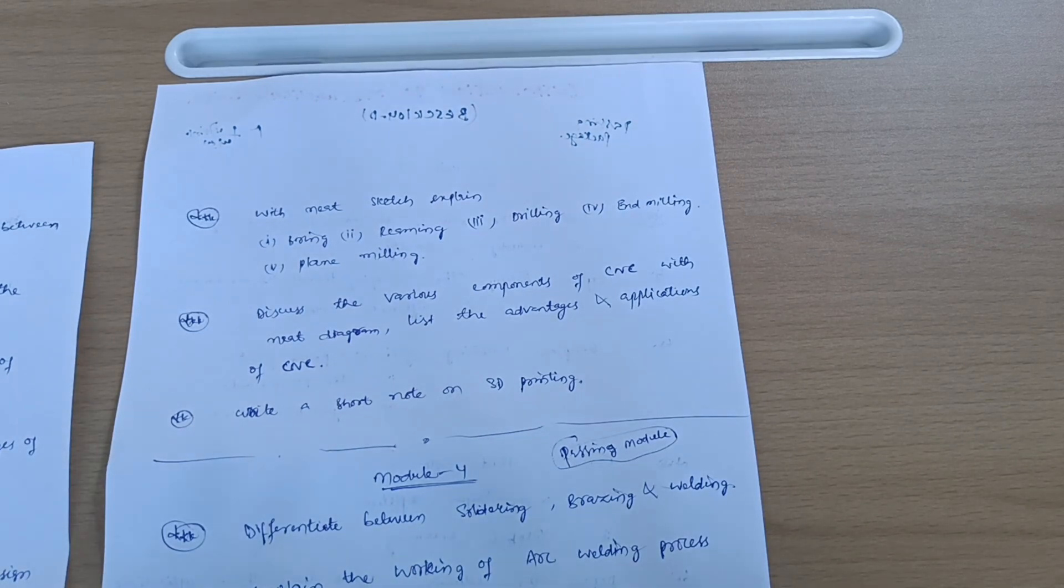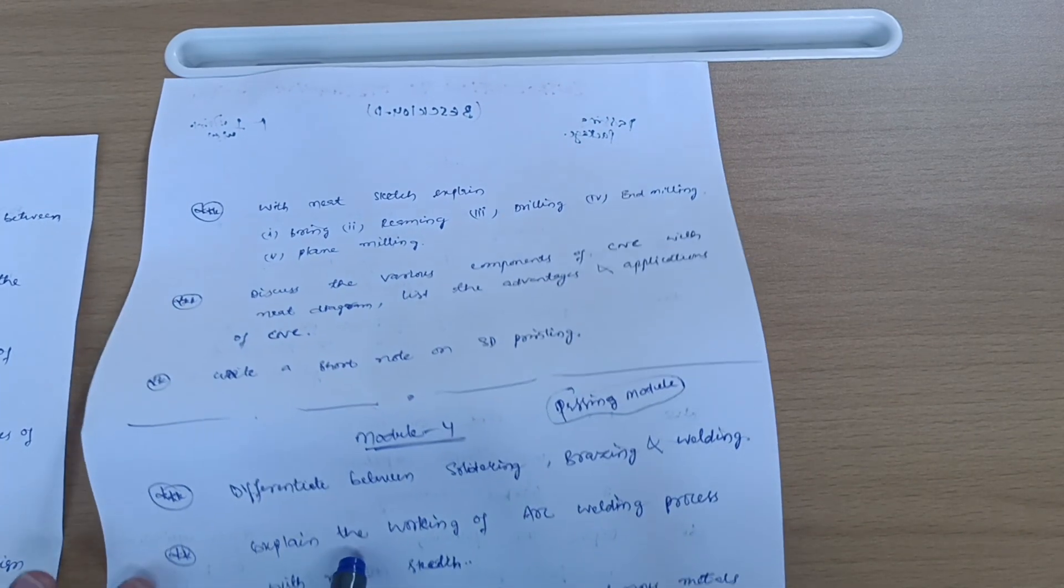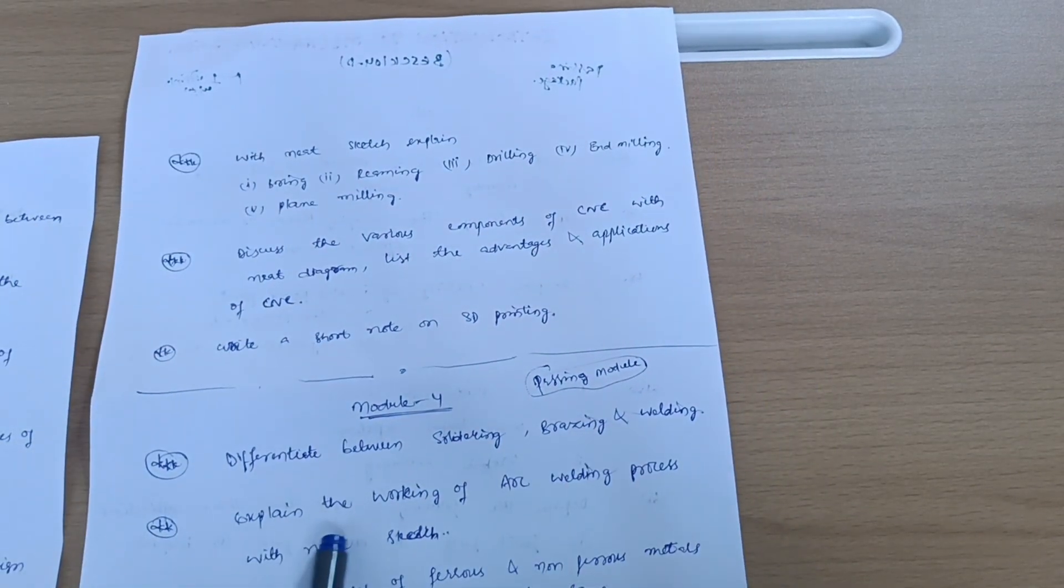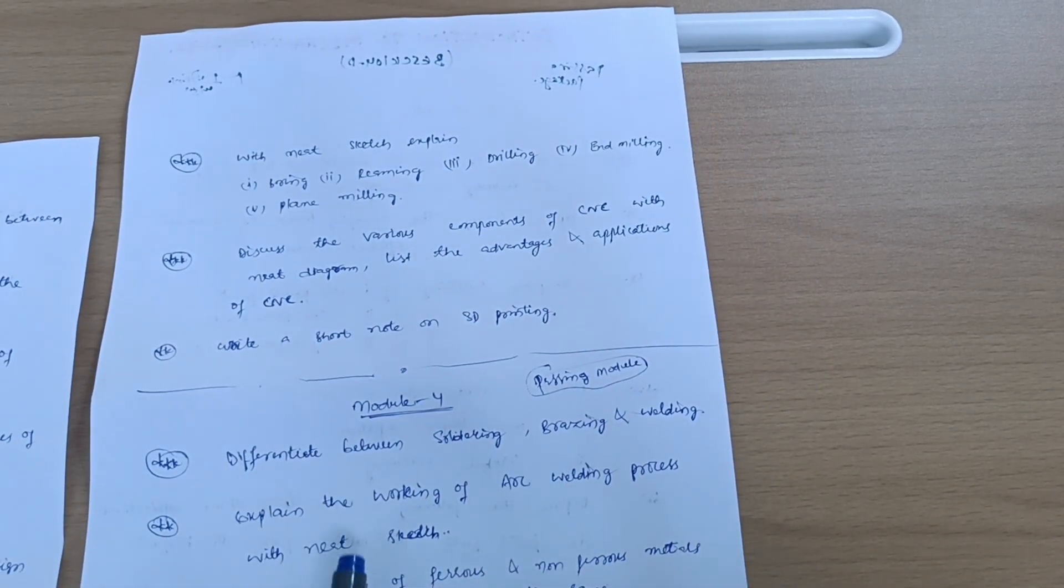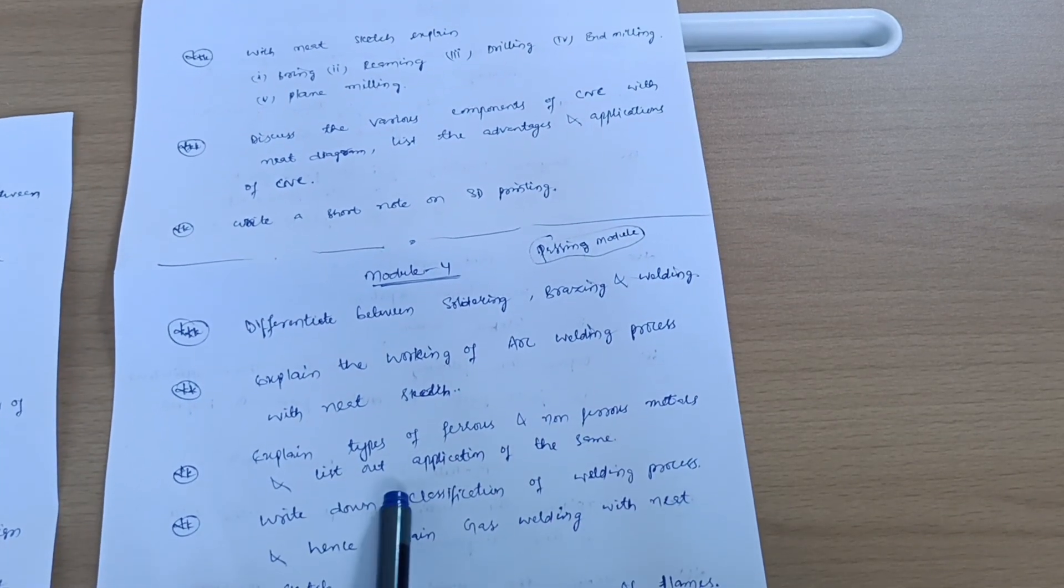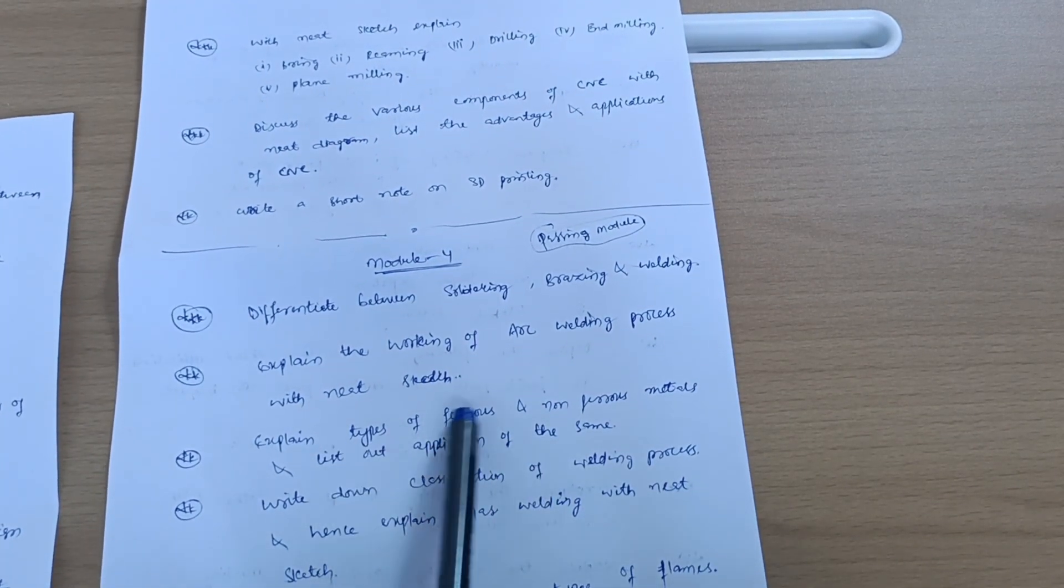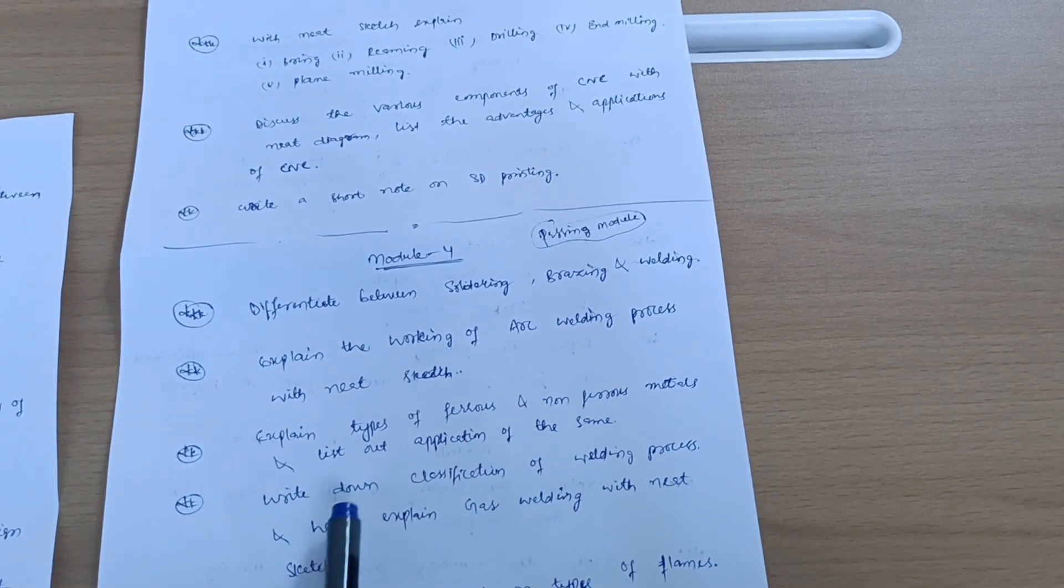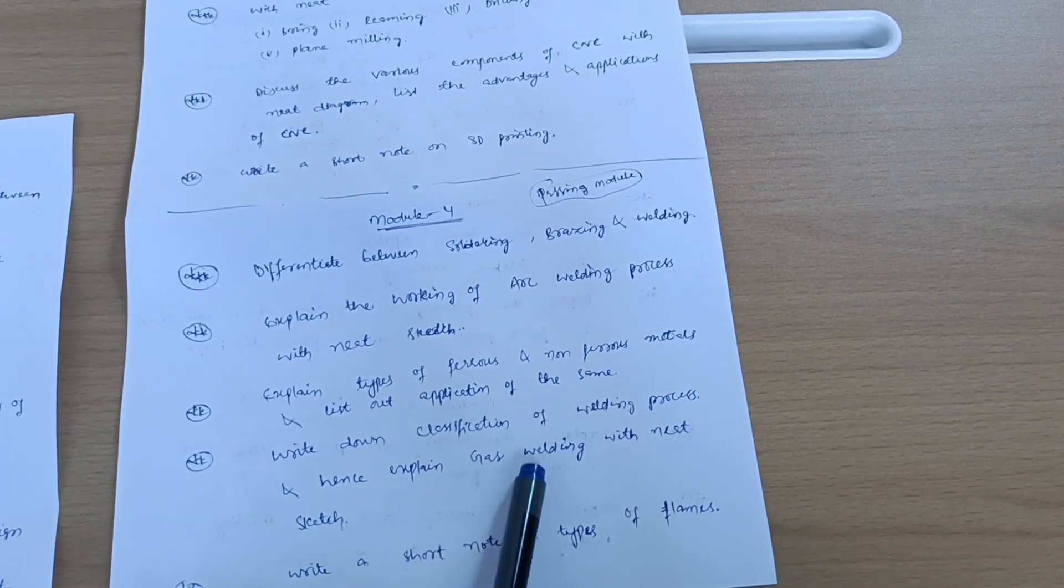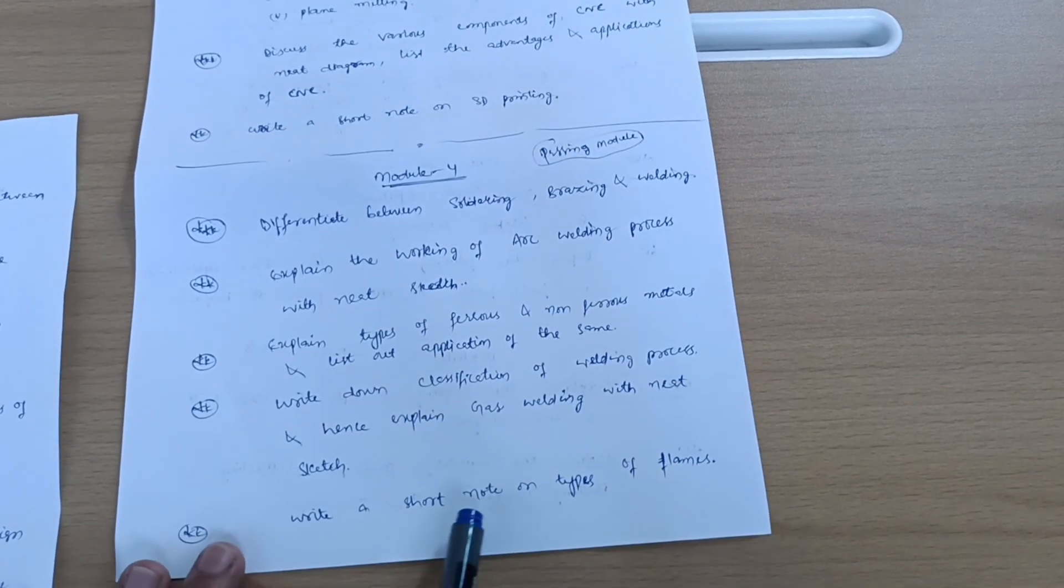Next passing module is Module 4, in which you have to cover questions like: differentiate between soldering, brazing and welding; explain the working of arc welding process with neat sketch; explain types of ferrous and non-ferrous metals and list out applications of the same; write down classification of welding process and hence explain gas welding with neat sketch; and write a short note on types of flames.